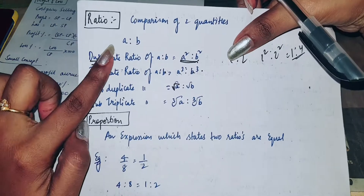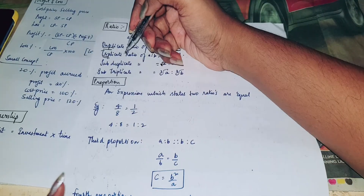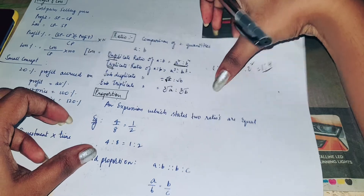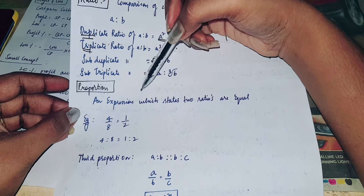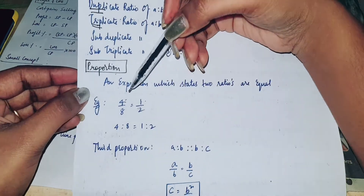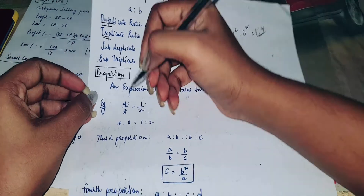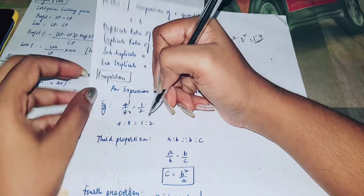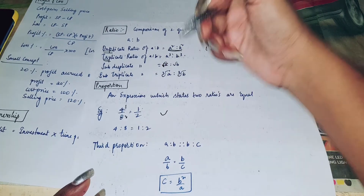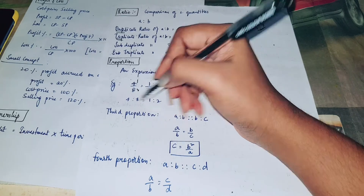And the next is proportion. Any expression which states that two ratios are equal is called proportion. For example, 4 by 8 is equal to 1 by 2. So 4 is to 8 which is nothing but 1 is to 2 — that is satisfying, so in these cases we have proportions.